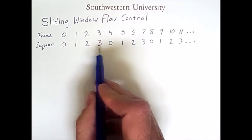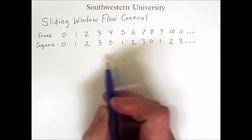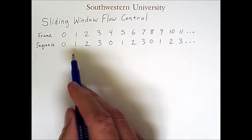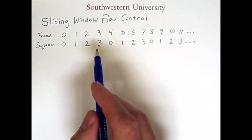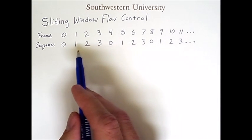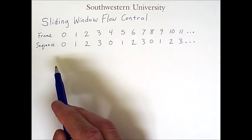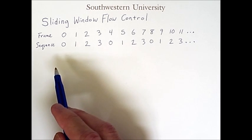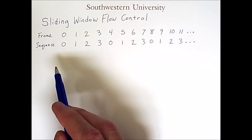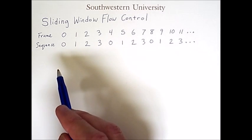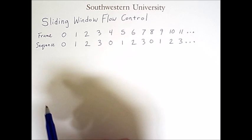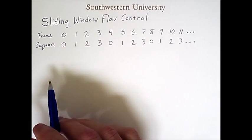So the sequence 0, 1, 2, 3 repeats over and over again. Given that we have a finite number of sequence numbers, and we want to keep sending frames, we can use a sliding window to determine which frames have been sent, which frames are safe to send before receiving an acknowledgement, and which ones have or haven't been acknowledged yet.